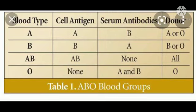Observe the blood group table: A blood group has cell antigen A and serum antibody B. B blood group has cell antigen B and serum antibody A. AB blood group has cell antigens A and B, with no serum antibody. O blood group has no cell antigen but has serum antibodies A and B. AB is the universal receptor and O is the universal donor. Thank you for watching the video.